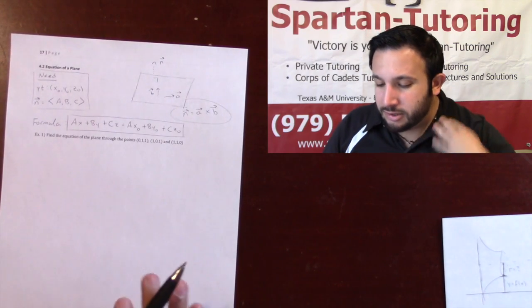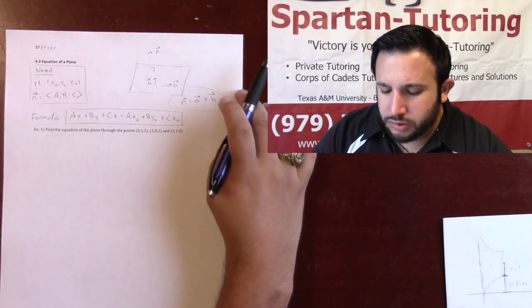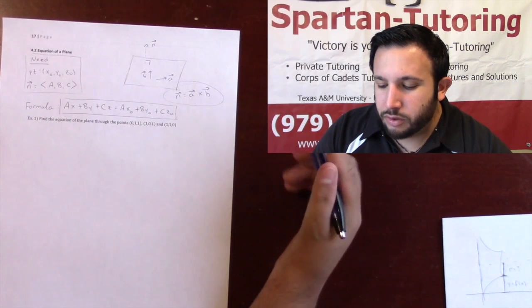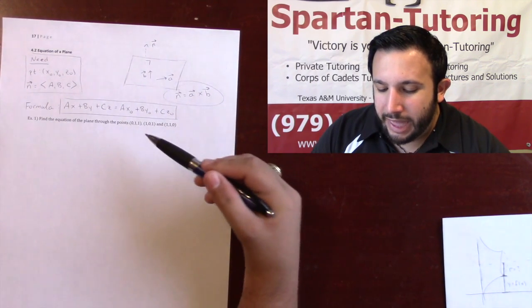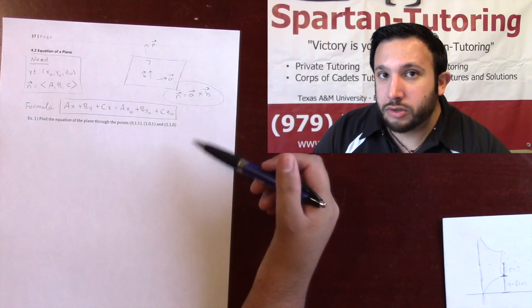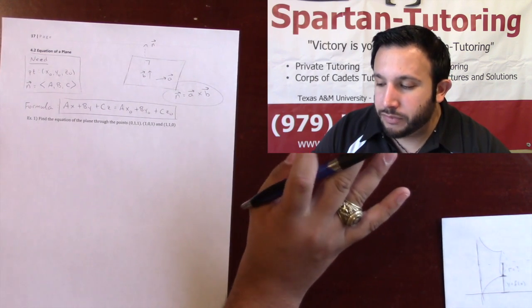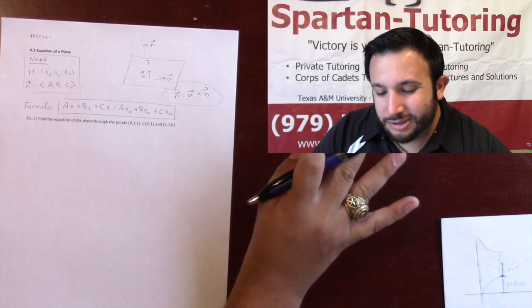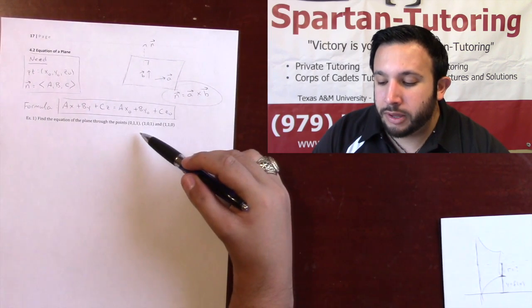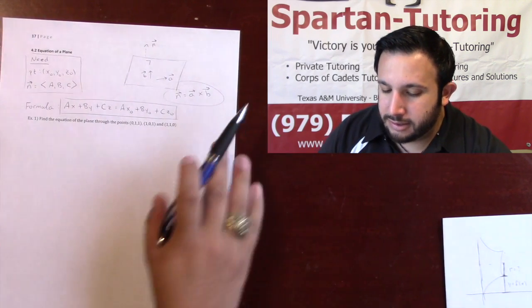This is going to be a three-part series. With this first question, we're going to do probably our most classic — the one I've seen most often. It's going to be how to find the equation of a plane that goes through three points. So this is part one: finding the equation of a plane through three points. Let's attack this.